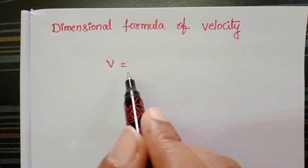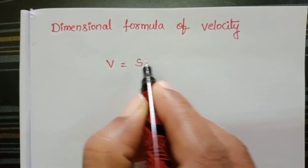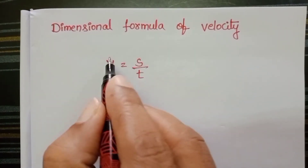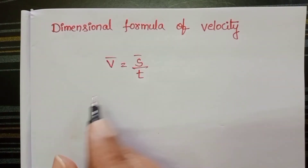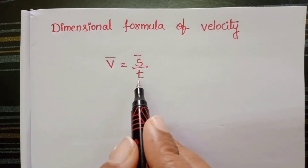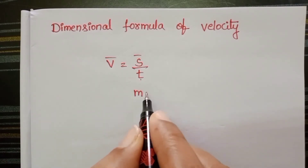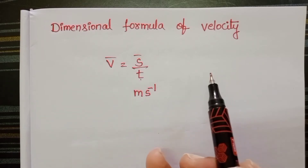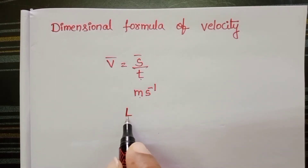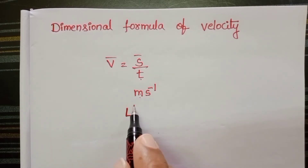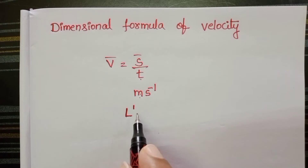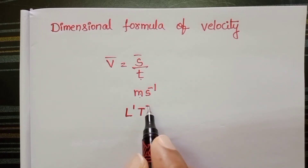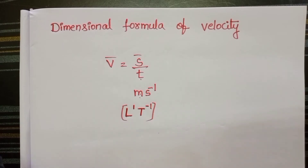The dimensional formula of velocity. Rate of change of displacement is called velocity. The SI unit of displacement is meter and the SI unit of time is second. So the SI unit of velocity is meter per second. The dimension of length is denoted with L, raised to the power 1, and time T is raised to the power minus 1. Therefore, the dimensional formula of velocity is L¹T⁻¹.